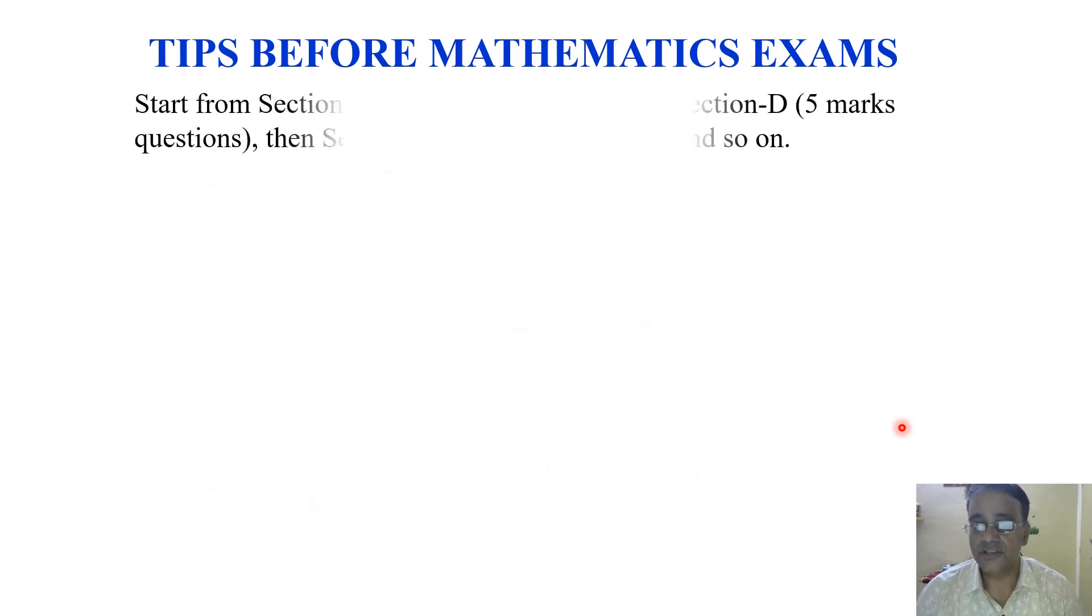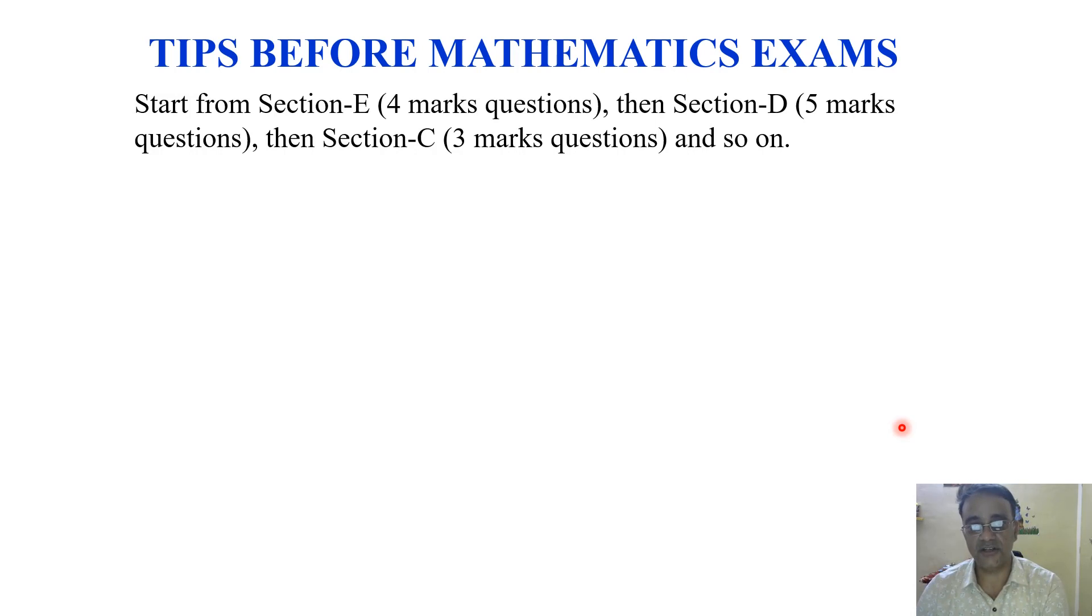One should start from Section E, that is four marks questions, then Section D, Section C, Section B, Section A. Or you can follow five marks questions, then four, then three, then two, then one mark questions.